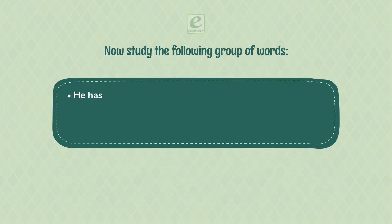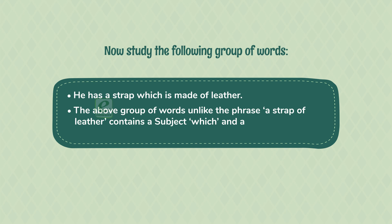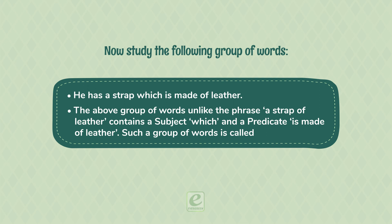Now study the following group of words: 'He has a strap which is made of leather.' The above group of words, unlike the phrase 'A strap of leather,' contains a subject — 'which' — and a predicate — 'is made of leather.' Such a group of words is called a clause.